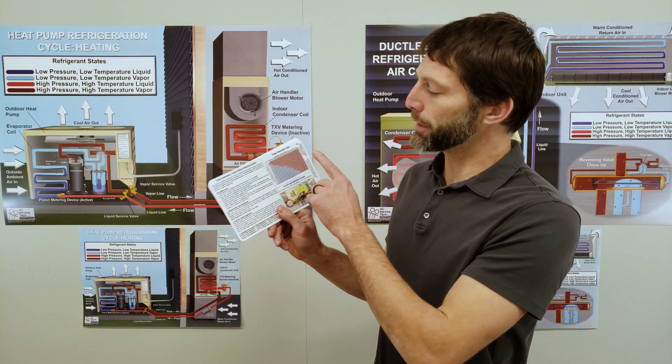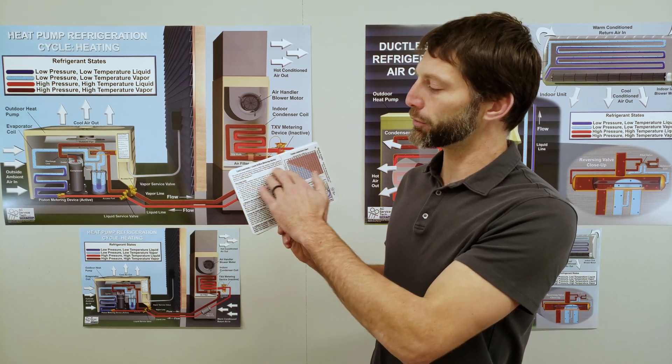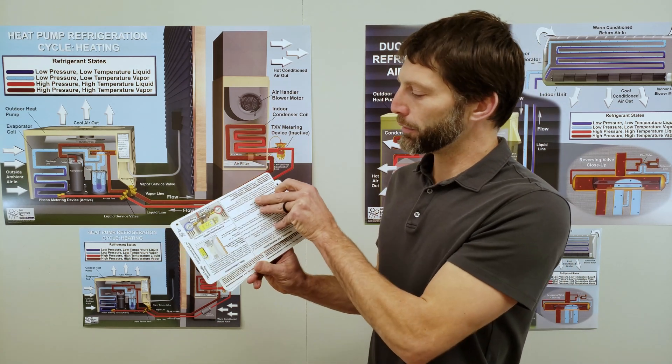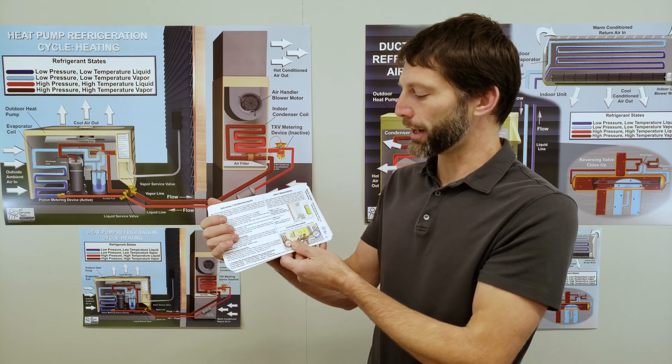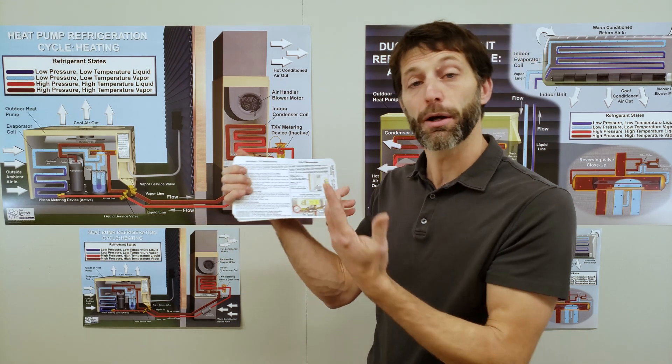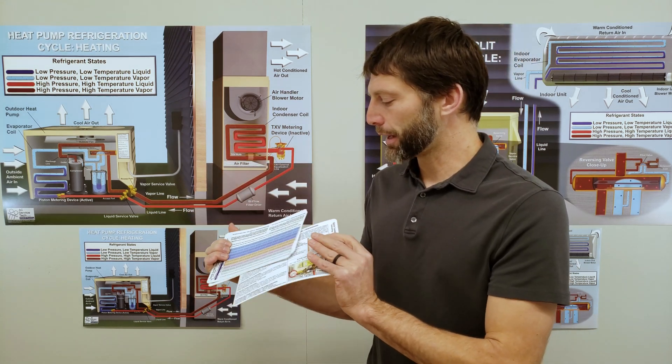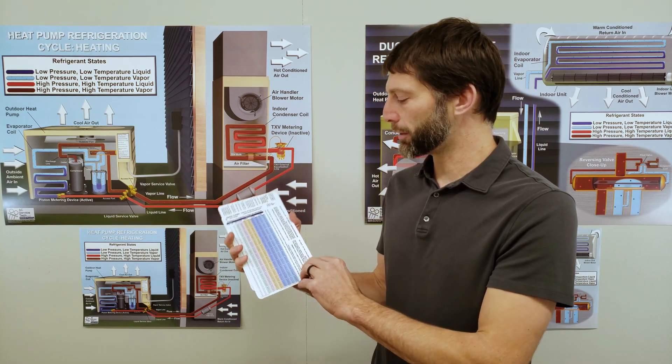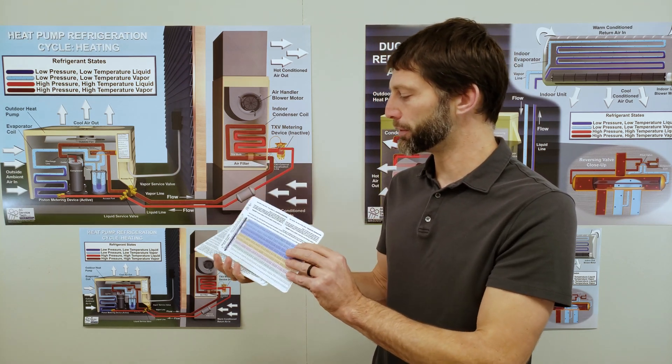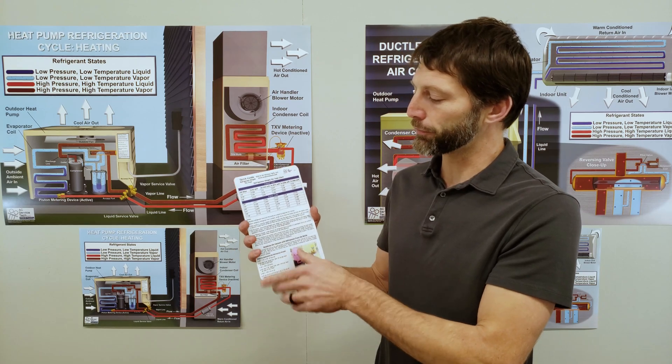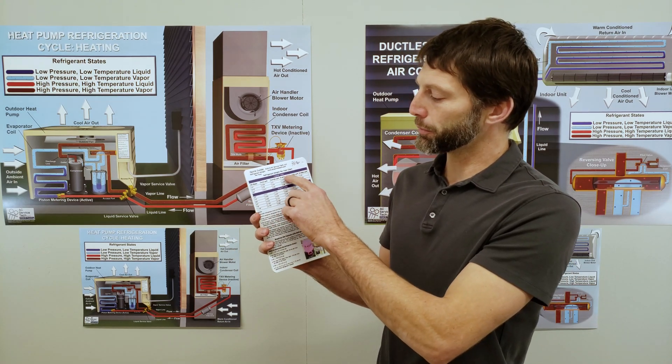We've got a target superheat chart right here and the total superheat steps. We've got subcooling over on this side, and we also go over your delta T measurements. And then right here, you have your PT chart, and then also some steps on bubble and dew.